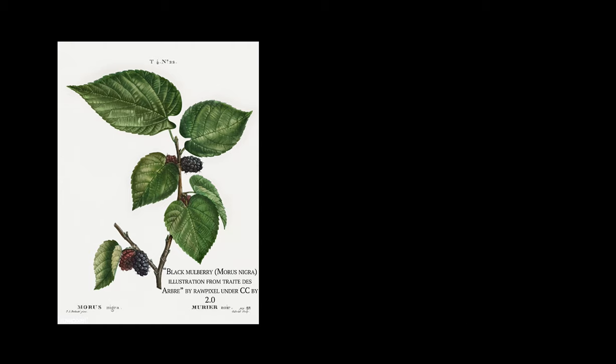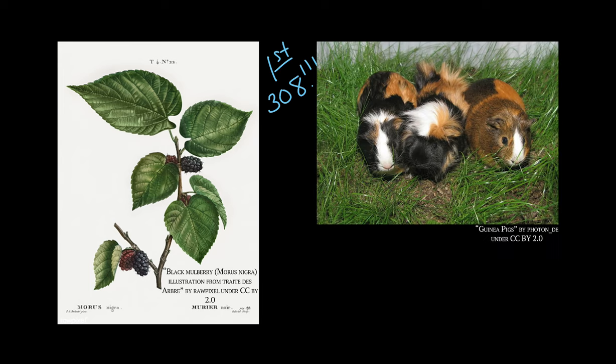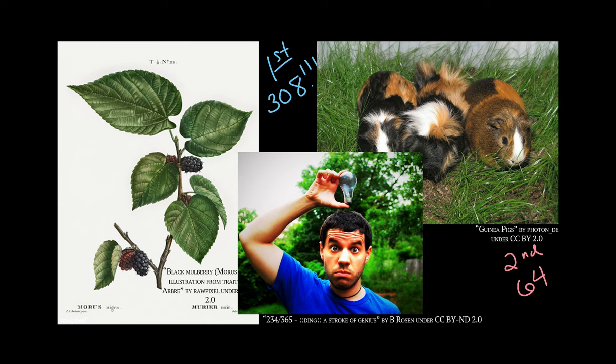The black mulberry plants do. These plants have a whopping 308 chromosomes. Guinea pigs come in second with 64 chromosomes. And like we said earlier, us humans only have 46 chromosomes, so we come in third.